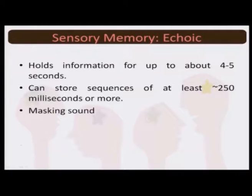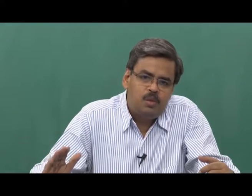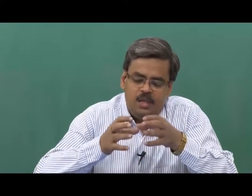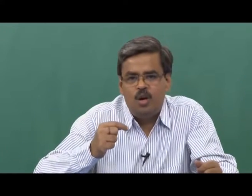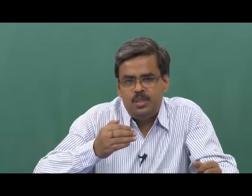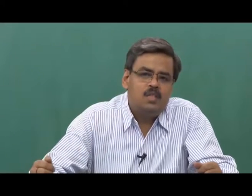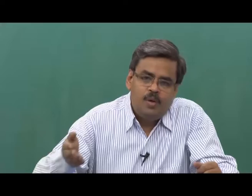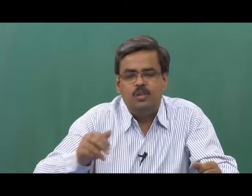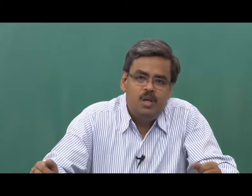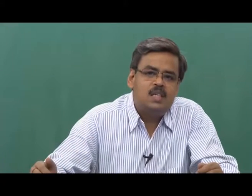Furthermore, echoic memory can also store the sequence of at least 250 milliseconds or more. Recollect what we talked about in the previous lecture regarding sensation — the inner ear, which has fluid filled in the cochlea, has nerve endings and because the ripples that are created take a little longer time to settle down, the amount of information held at the level of the sensory modality will be a little longer. In the case of eyes, it was the cis-to-trans configuration and back to cis that facilitated storage, whereas in echoic memory it is the settling down of the ripples created in the cochlea.